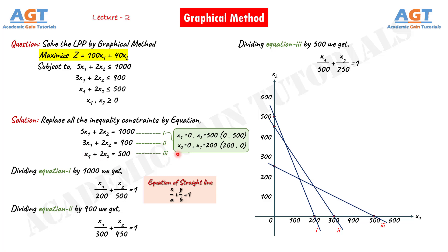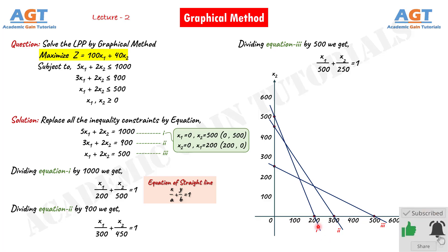Now if we check with the second method, we got two points for the first equation: (0, 500) at this point and (200, 0) at this point. We join these two points and get the same line one that we got using the first technique. Similarly we can plot the other two lines using this technique. Since the first method seems easier, I am using that technique. The result will be the same for both techniques. So here we have three lines for three equations.